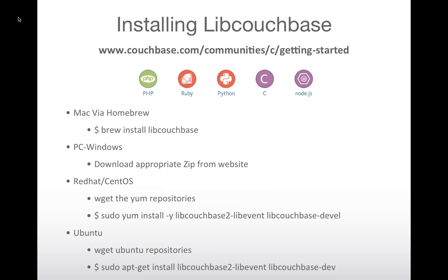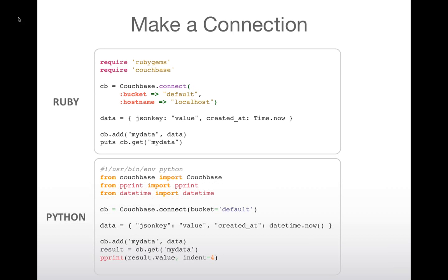For Java and .NET: for Java, we have Maven repositories, so if you're using Maven or Gradle, we have repositories for that, or you can download them directly from the website. For .NET, we use NuGet — I guess that's the Homebrew for Windows — and it's very straightforward and similar.